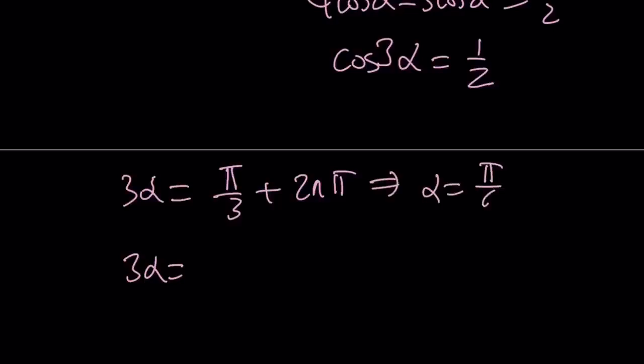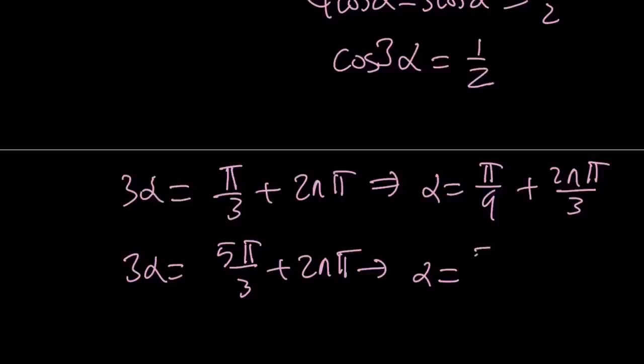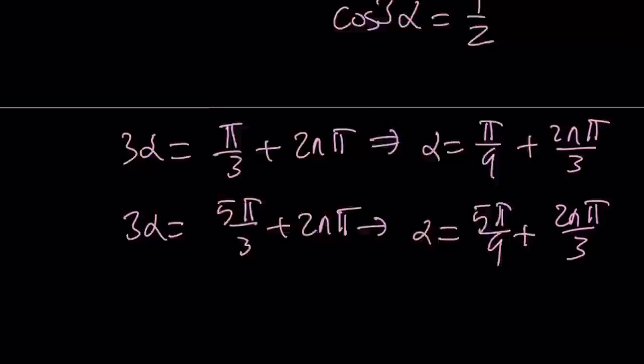α = π/9 + 2nπ/3, or we can write that 3α as 2π - π/3, that's going to be 5π/3 + 2nπ. And then we're going to get α = 5π/9 + 2nπ/3. Okay, great.